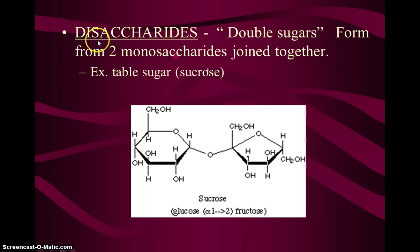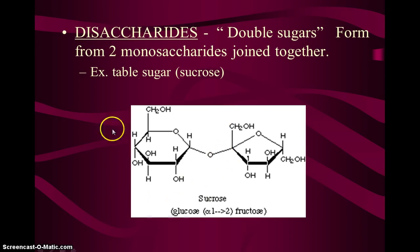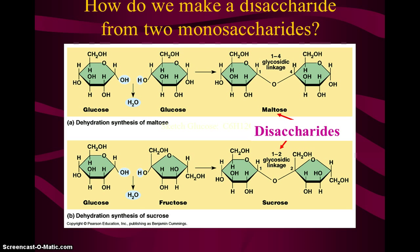Disaccharides — di means two, so two sugars. A disaccharide is two monosaccharides joined together. Here's one monosaccharide and here's the other; they're bonded together to make a disaccharide. Sucrose is a good example of a disaccharide sugar. You can make disaccharides using dehydration synthesis: take two monosaccharides, remove the water, a bond forms, and you get a disaccharide.